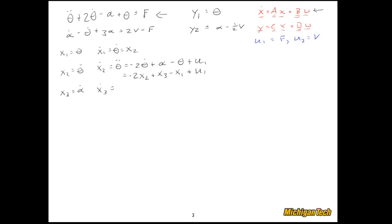One more: x3_dot = alpha_dot. Solving the second equation for alpha_dot gives: theta_dot - 3·alpha + 2·U2 - U1. Writing in terms of x's: x2 - 3·x3 + 2·U2 - U1. I'm essentially done — I just have to write this in matrix form to define my A, B, C, and D matrices.